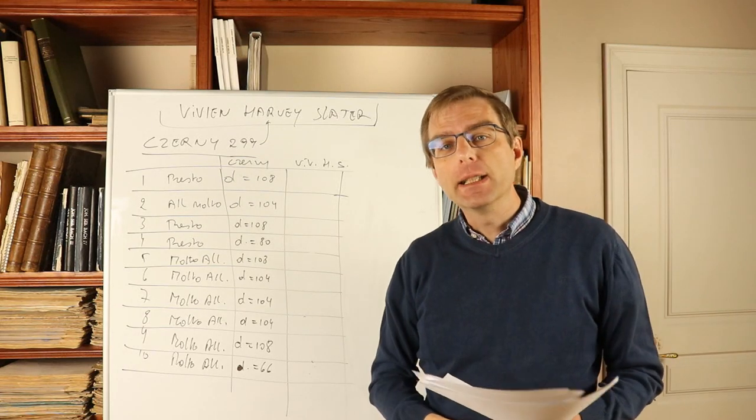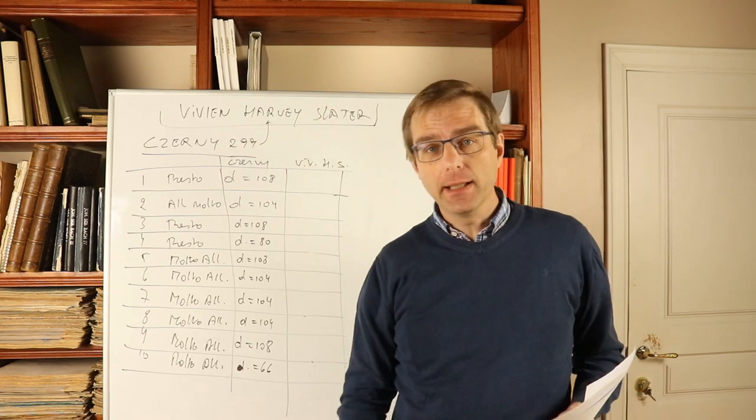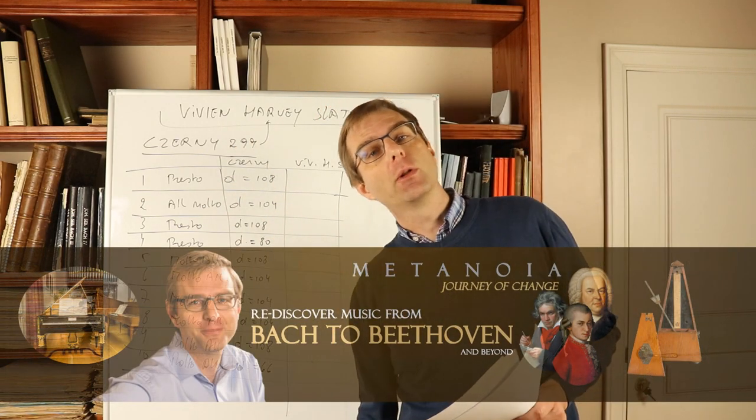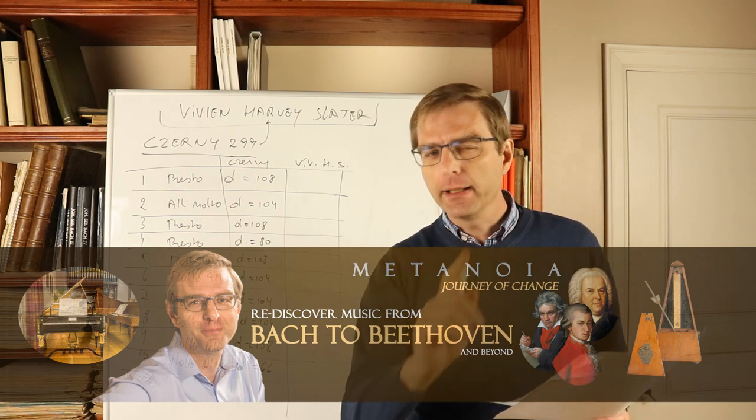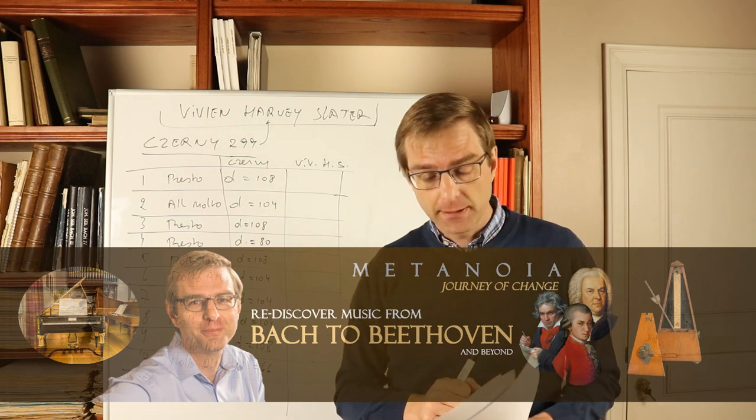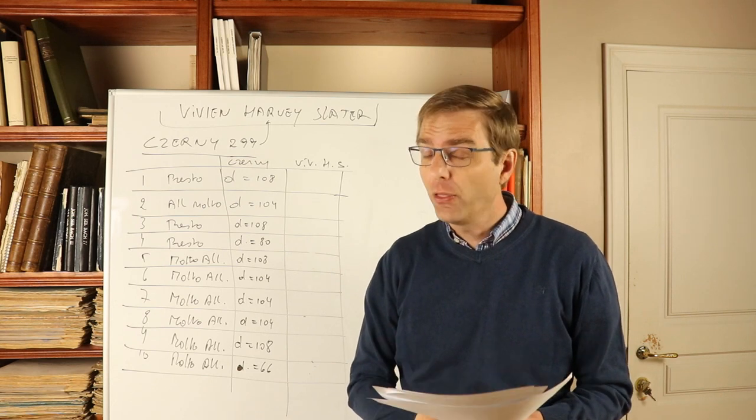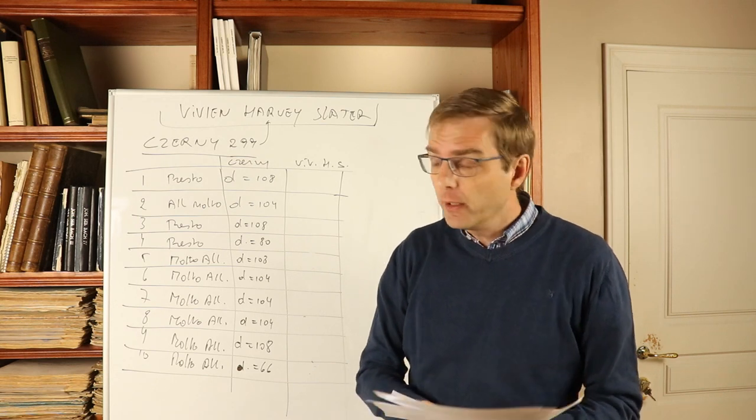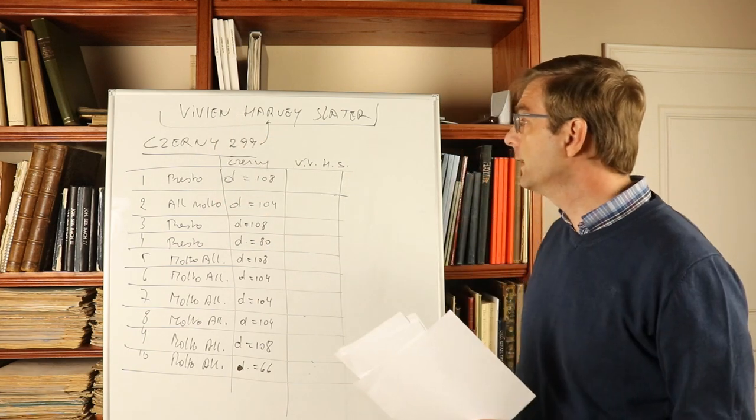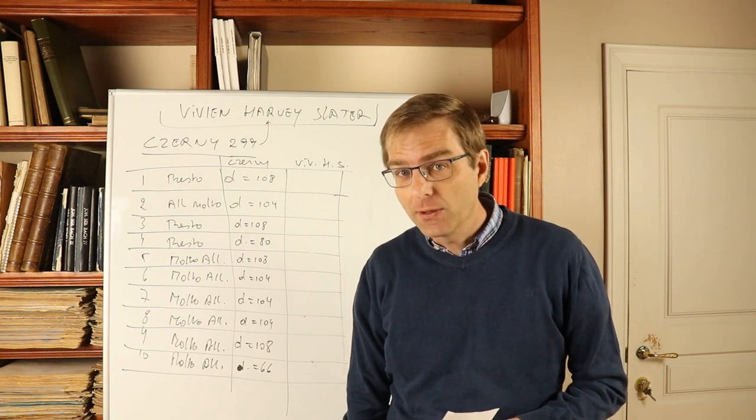Hello everyone and welcome to this video in which we are going to touch upon Czerny Op. 299, the famous bundle of etudes Czerny wrote around 1835-1839, the Schule der Gelaufigkeit, the School of Velocity. That bundle of etudes was very influential throughout the 19th and 20th century, and we are going to connect that with a recording made by Vivian Harvey Slater, who was a fourth generation Czerny student.